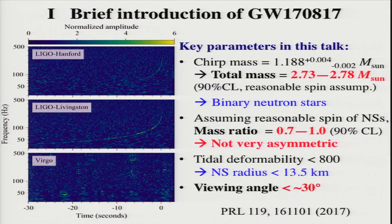First, I'd like to briefly review the observational result of GW170817. This is a key parameter for this talk. By the detection of the gravitational waves, the LIGO-Virgo collaboration determines the chirp mass within a very small error bar. Assuming the spin of each neutron star is not very high, the chirp mass can be transformed to the total mass, which is between 2.73 to 2.78 solar masses. This indicates that the source is a binary neutron star.